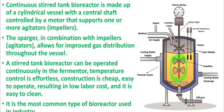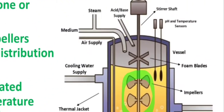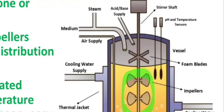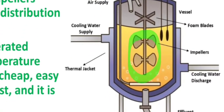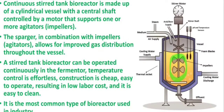A stirred tank bioreactor can be operated continuously. Temperature control is effortless, construction is cheap, it is easy to operate resulting in low labor cost, and it is easy to clean. It is the most common type of bioreactor used in industries. Inside this bioreactor we have different valves and pipes for air supply, medium supply, acid or base addition to control pH, and temperature sensors. There is also cooling water and a discharge pipe for effluent to remove the product after fermentation.